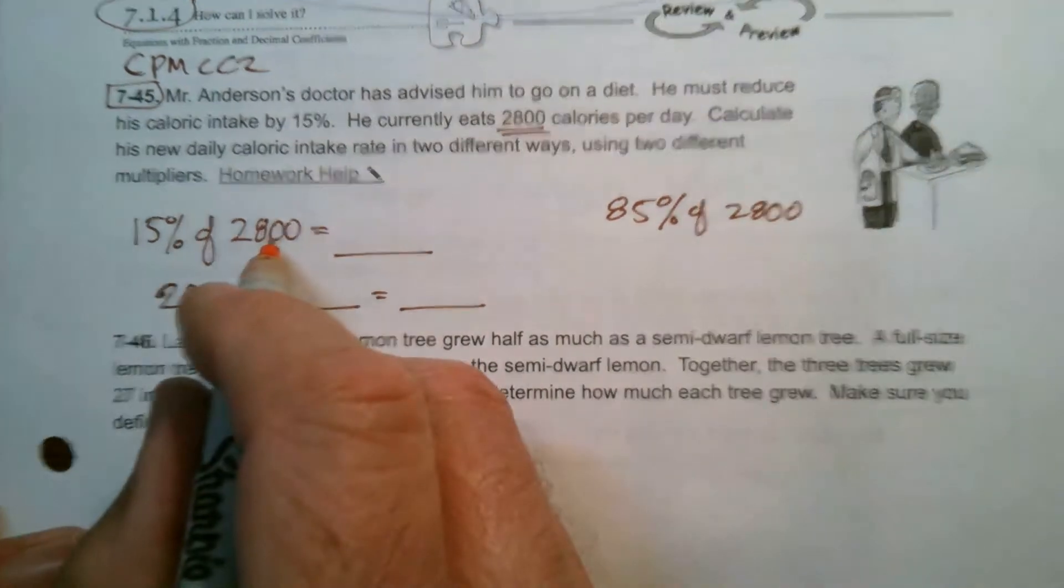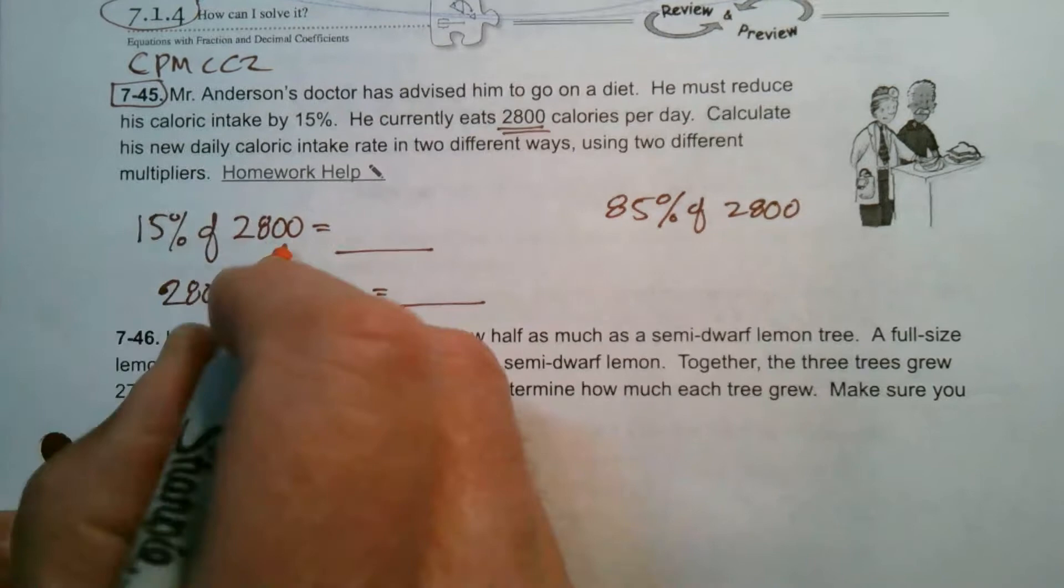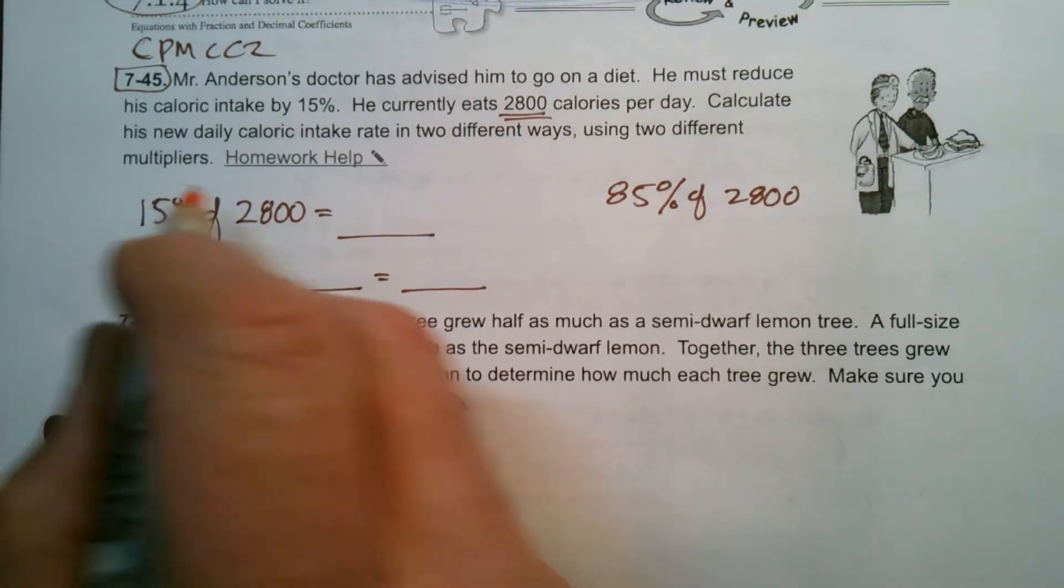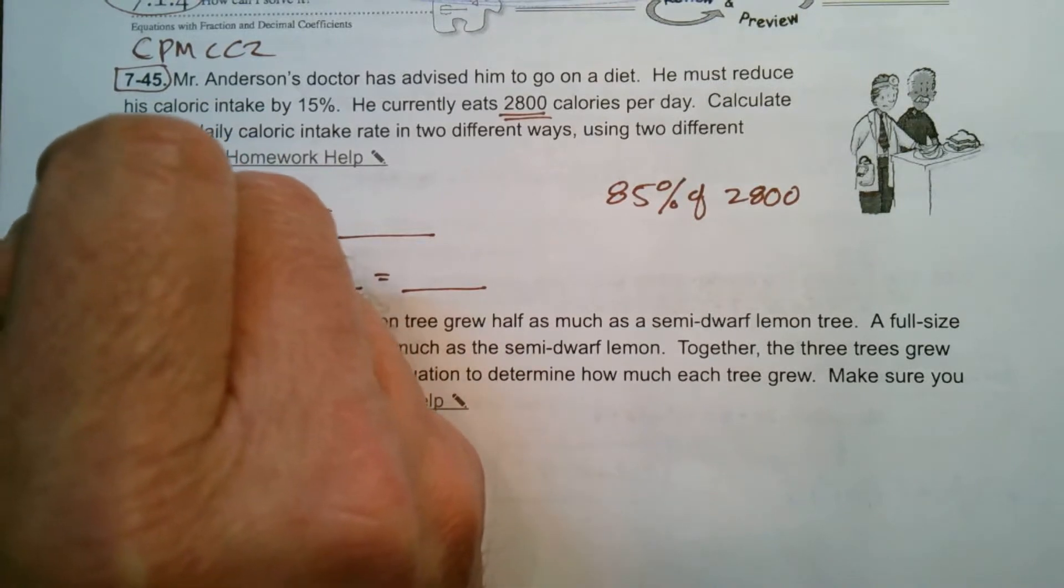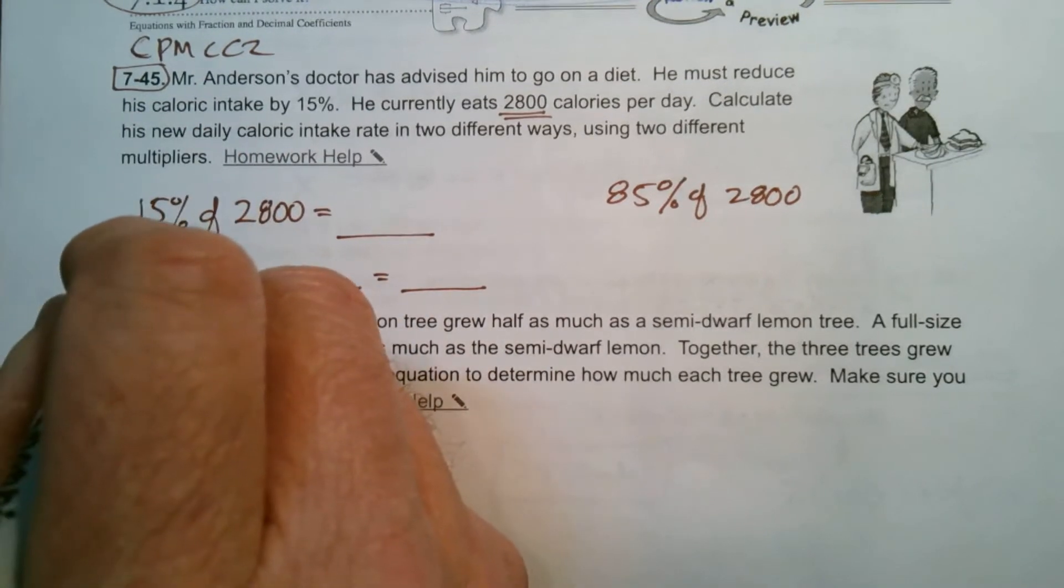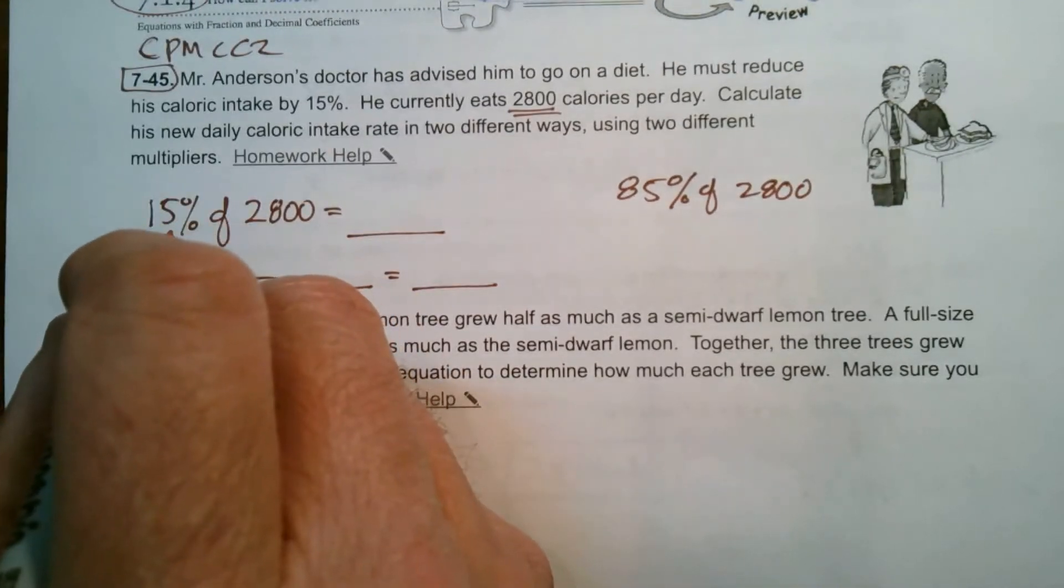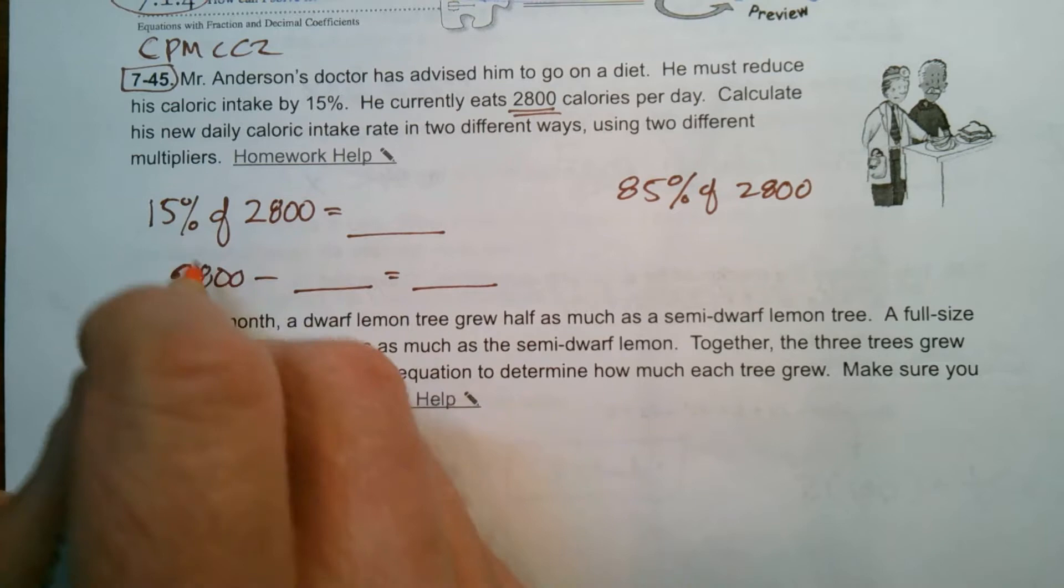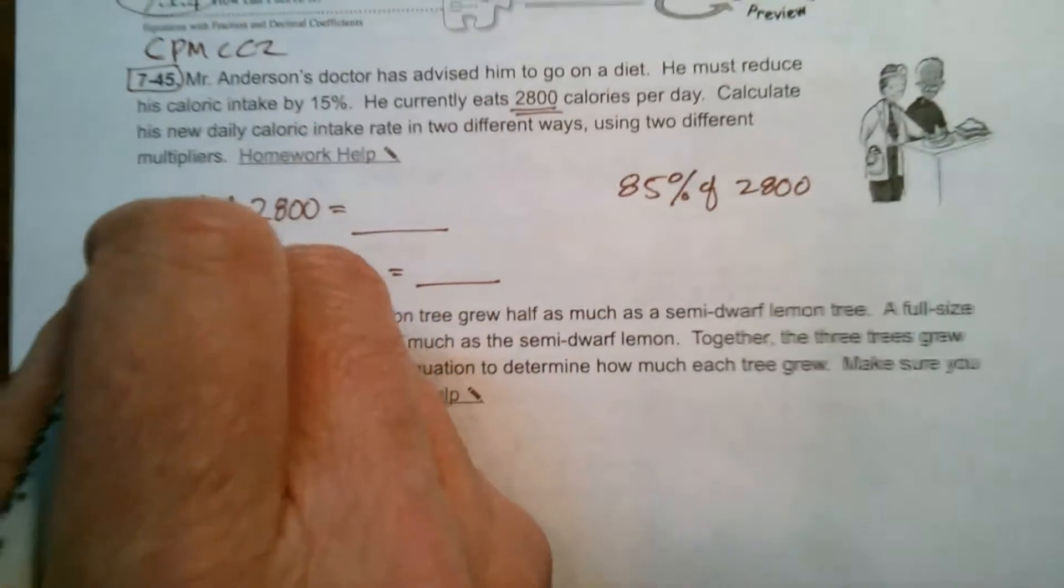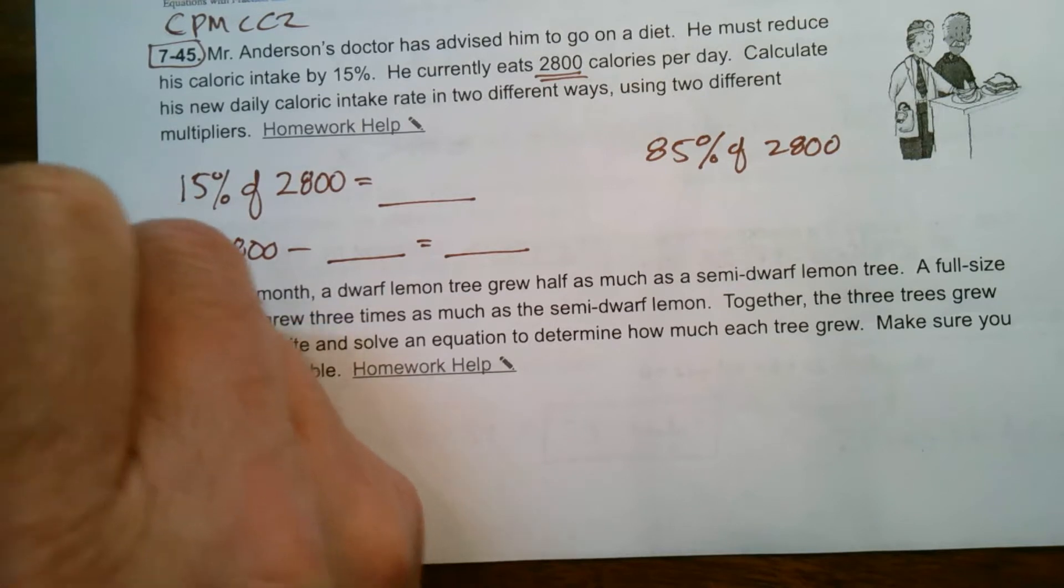So first of all, 15% of 2,800. Remember, in order to do this type of math here, you've got to have a multiplier. My multiplier in this case is always either a fraction or a percent. So in this case, I'm going to use a fraction because it's going to keep my numbers nice. I'm going to go 15 over 100 because you always put a percent over 100 and I'm going to multiply that times 2,800.